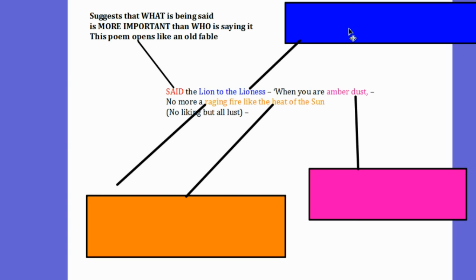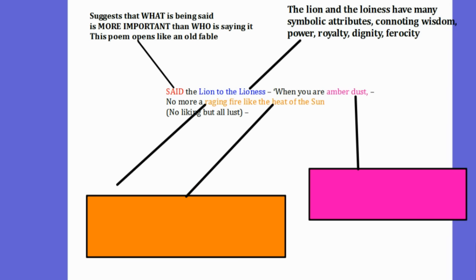Then we have this phrase lion to the lioness. Now the lion and the lioness may have symbolic attributes connoting wisdom, power, royalty, dignity and ferocity. This is perhaps the reason why of all animals the lion has been chosen to speak to the lioness. They are quite dignitary animals. The lion is of course the king of the jungle. So it's quite fitting that the lion, an important animal, be chosen to speak about this important subject, which is love.